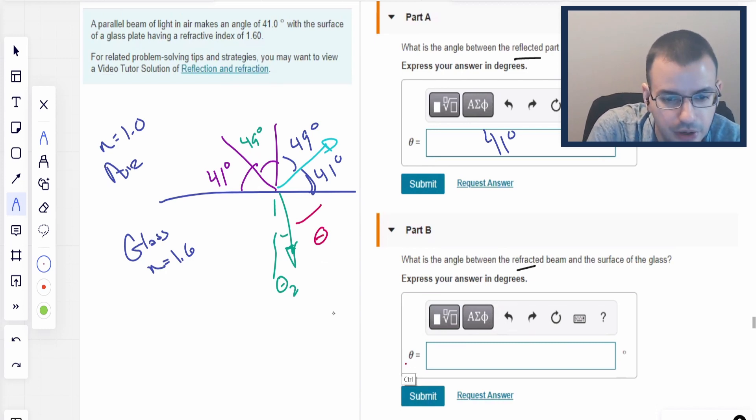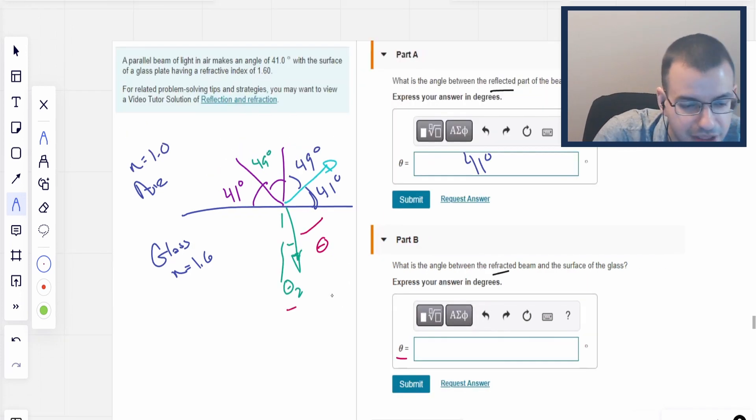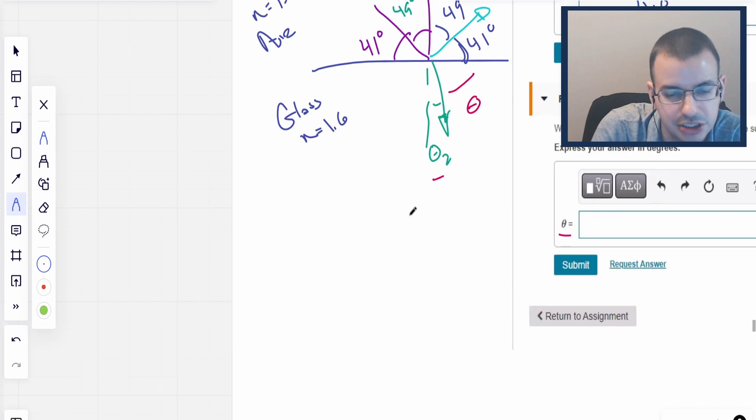So angle of incidence equals angle of reflection. So angle comes in at 41, leaves at 41 with respect to the surface, or 49, 49 with respect to the normal. What is the angle between the refracted beam and the surface of the glass?